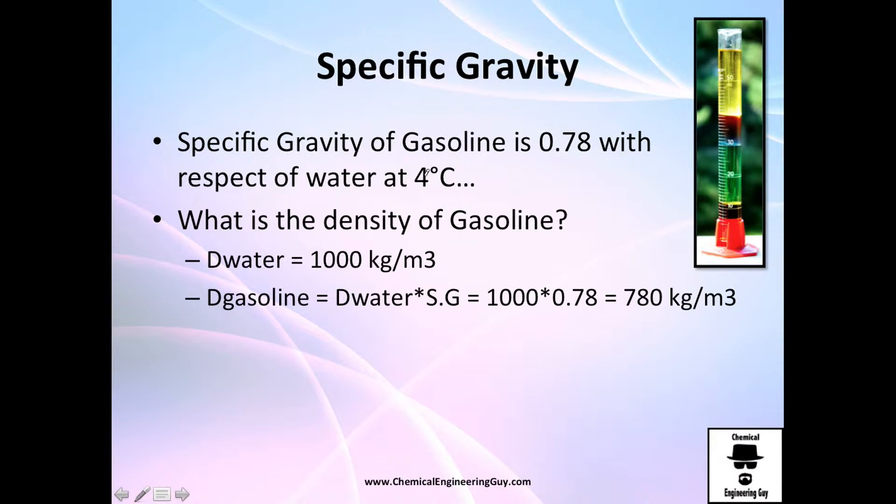For example, the specific gravity of gasoline is 0.78 with respect to water. What is the density of gasoline? The density of water is 1000 kg/m³, so density of gasoline equals density of water times specific gravity: 1000 × 0.78 = 780 kilograms per cubic meter.